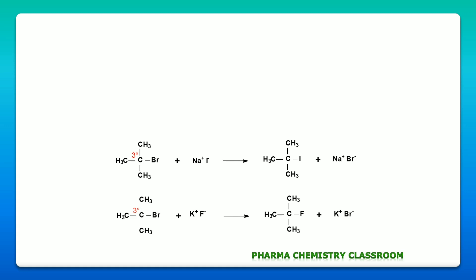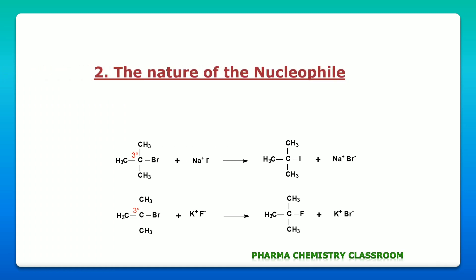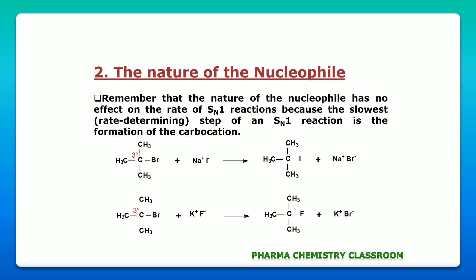Next, the nature of the nucleophile — the nucleophile has no effect on the SN1 reaction because the rate-limiting step depends only on the reactant alkyl halide, which is the slowest step — the formation of the carbocation. Here is an example where the same tertiary alkyl halide reacts with two different nucleophiles, I⁻ and F⁻, and these two different nucleophiles make no difference in the rate of the reaction.